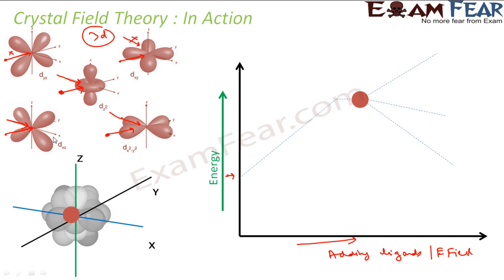For example, if the electron is approaching from somewhere in between — say along the xy diagonal — it will first hit the dxy orbital. So it depends on the direction of approach, which is determined by the geometry. If it is octahedral, ligands approach from six directions. If it is tetrahedral, they approach from four different directions. Based on the approach of the ligand, the energy split will happen differently for tetrahedral versus octahedral geometry, though the underlying concept is the same.